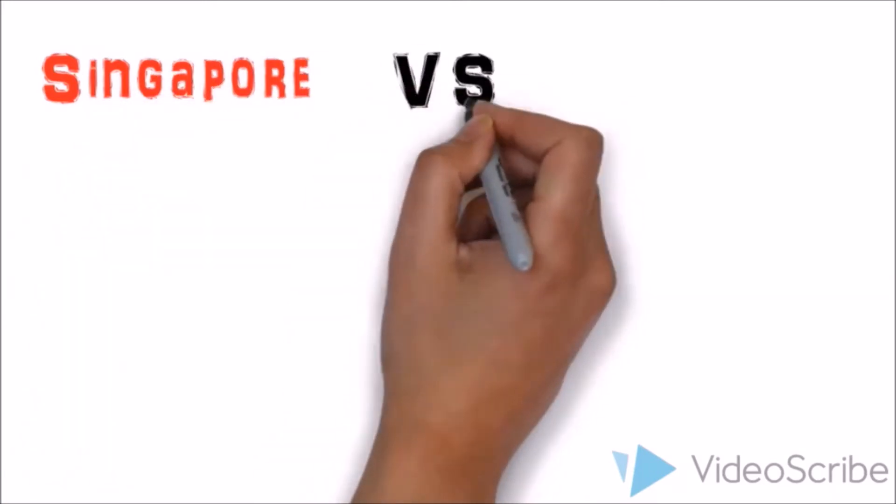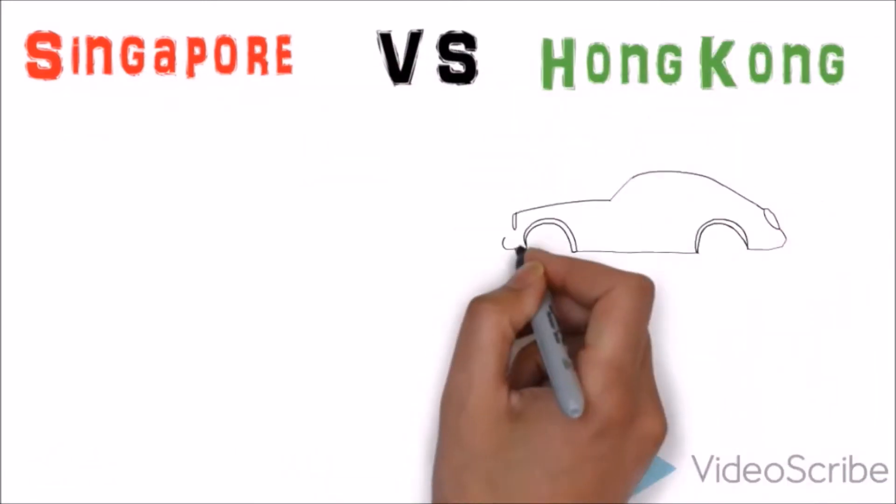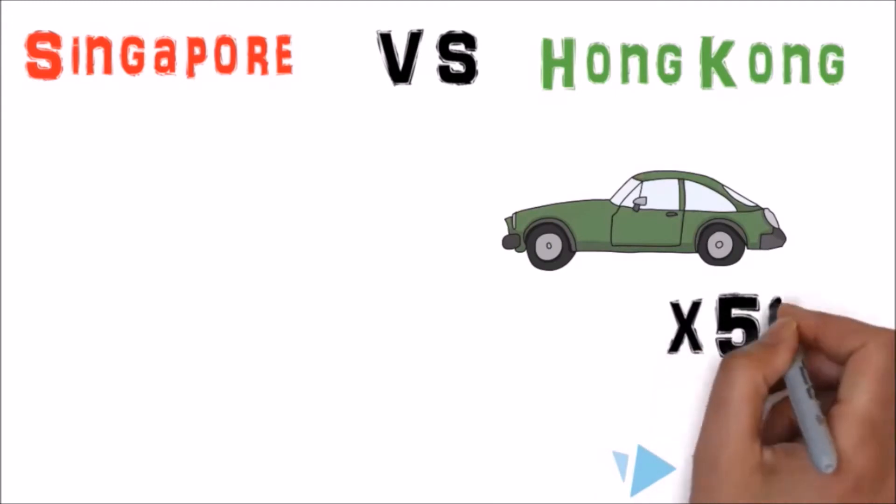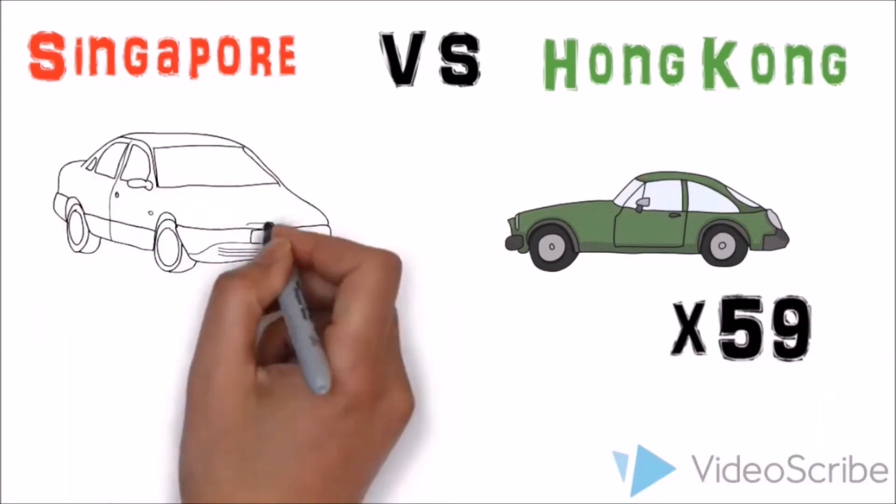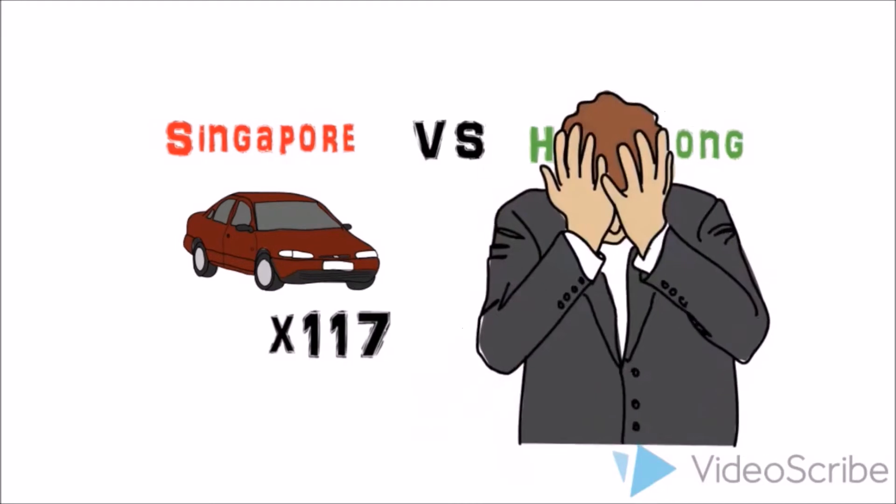Comparing Singapore to other similar cities, Hong Kong has 59 cars per 1,000 residents, half of Singapore's 117. This is despite them being almost similar in country characteristics.